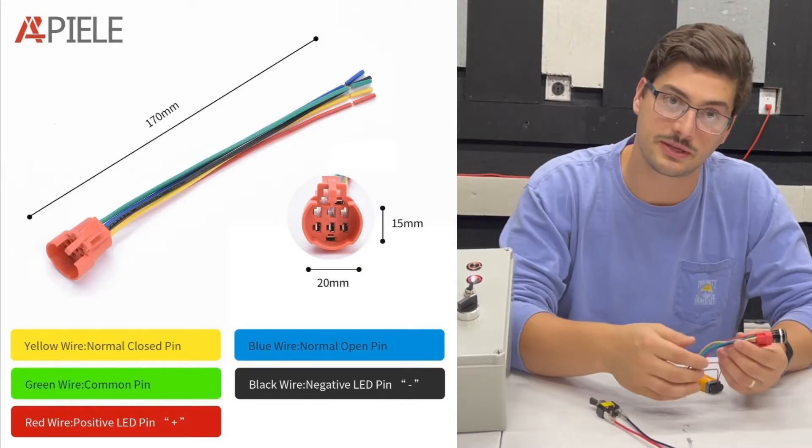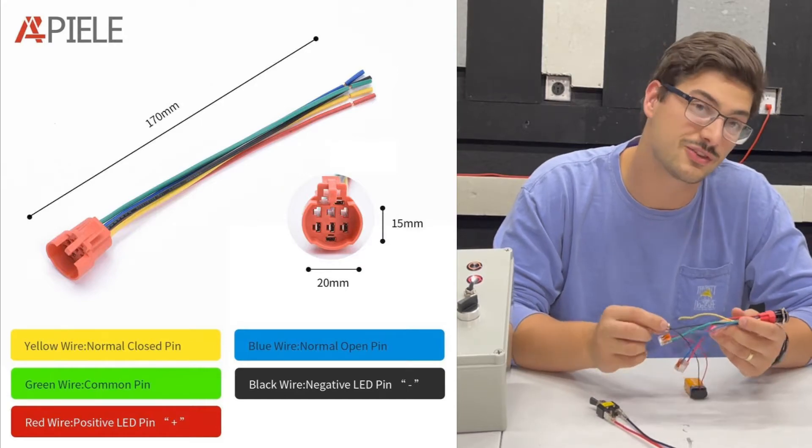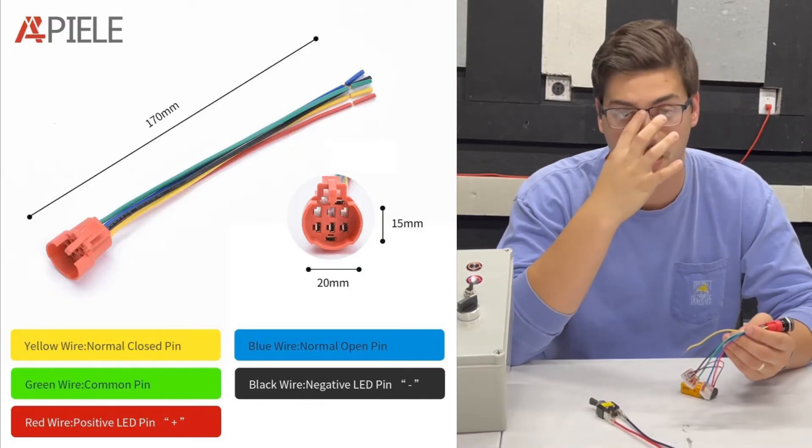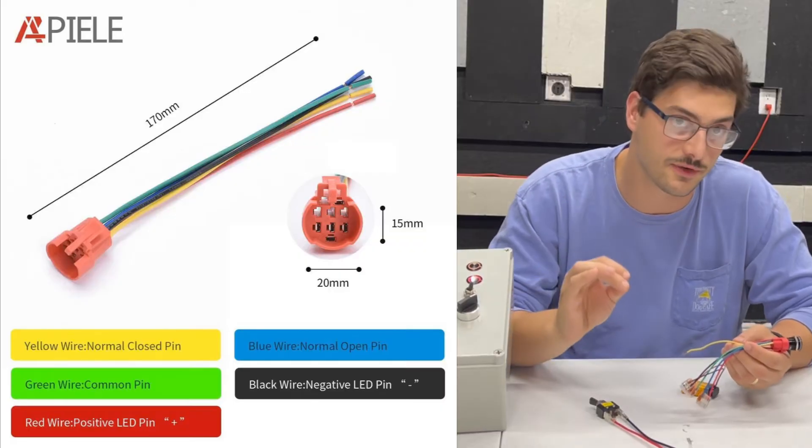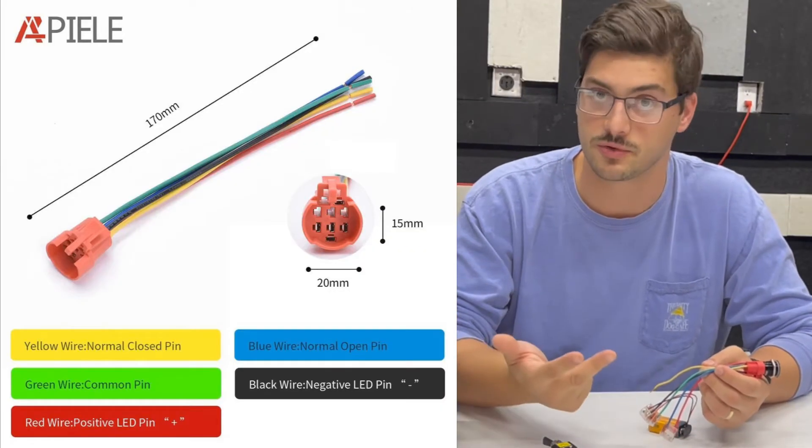On this momentary push button in particular, there are five wires total. Two of them are just the power circuit for the LED. So to discuss the controls concept going on here, we actually just want to focus on the other three wires first. And those three wires are common, normally open, and normally closed.